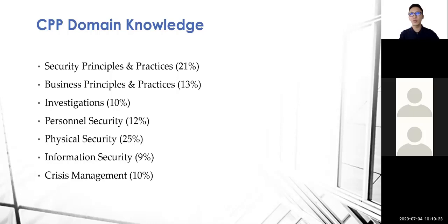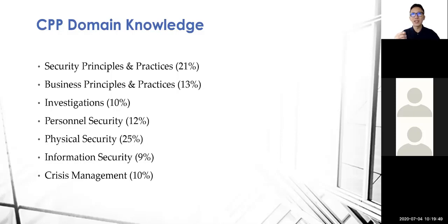The reason these five domains are included in the CPP is that ASIS's professional certification board has conducted research over the years. They review and update the domain content every five years, so these percentages can change based on member feedback and research. Historically though, the numbers have not changed much.